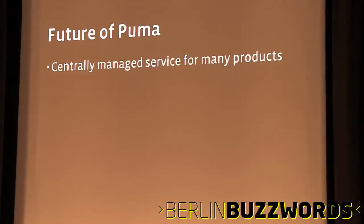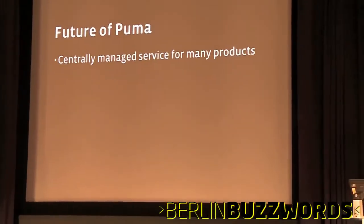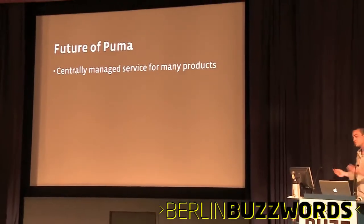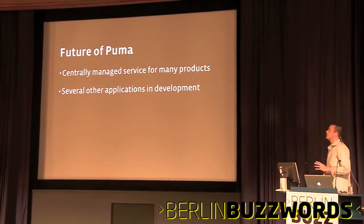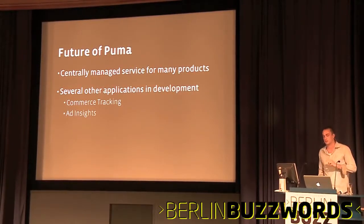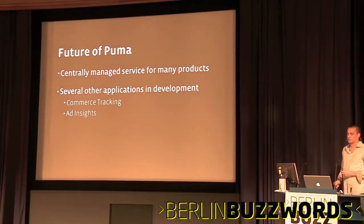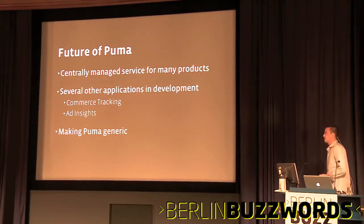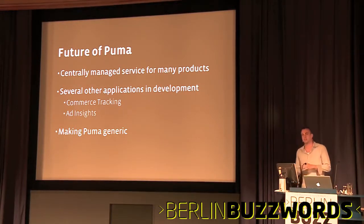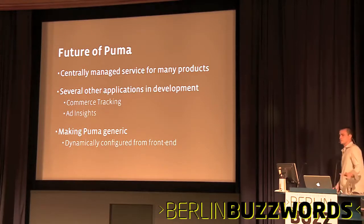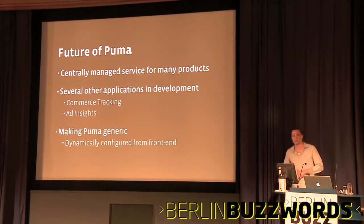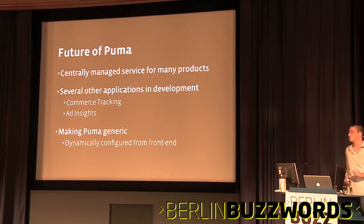What's the future of Puma? Well, Puma is one of the first centrally managed services that's going to be used for a bunch of different products, with an infrastructure team actually managing it versus the product teams building it themselves. We have a bunch of other stuff in development: commerce tracking, ad insights — which is a really big one — and a bunch of others. One of the big efforts underway right now is making Puma generic. Right now the business logic lives inside Puma written in Java, which makes it a little difficult to change. So we're working on a way to dynamically configure it from the front end, so if the front end wants to add a new log stream, change the format, or add a new dimension, they can just do it — infrastructure doesn't have to know about it.